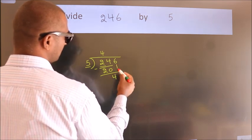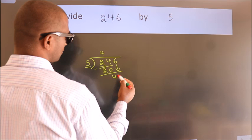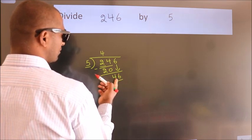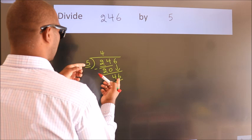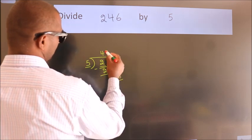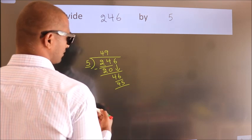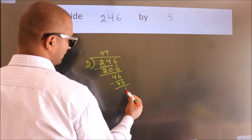After this, bring down the beside number. So, 6 down. So, 46. A number close to 46 in 5 table is 5 nines 45. Now, we subtract. We get 1.